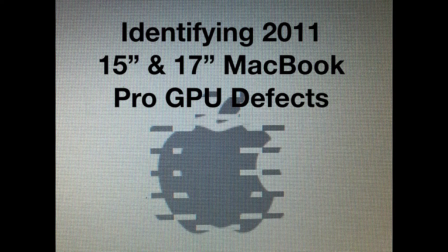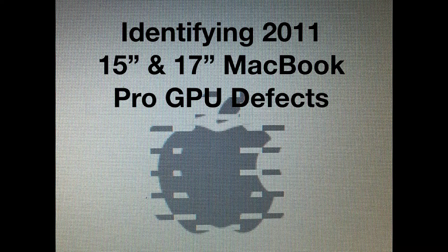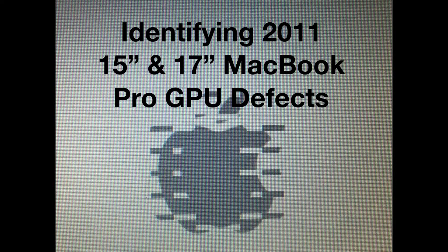These defects are something I deal with quite a bit as a refurbisher. 2011 was an absolutely horrible year for Apple. The 15-inch Pro i7 quad series they came out with, both the early 2011 and the late 2011, they were just awful machines. Only a little while after being released, they started to show GPU defects. Once you get them, your machine is scrapped, basically.